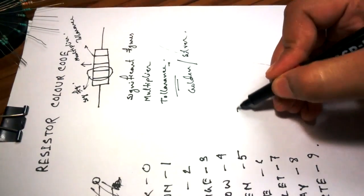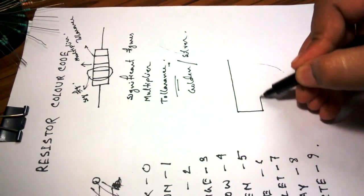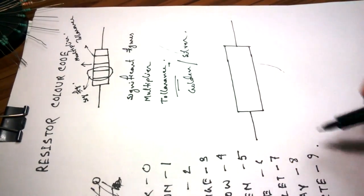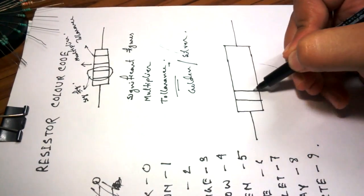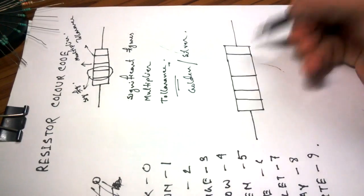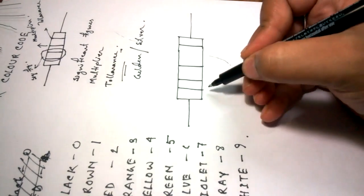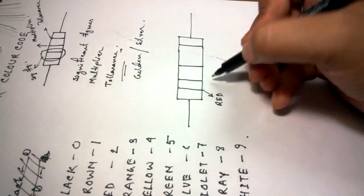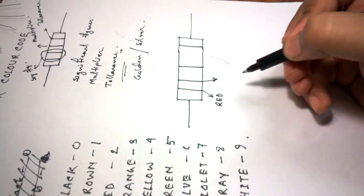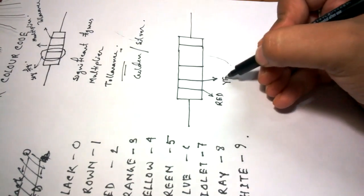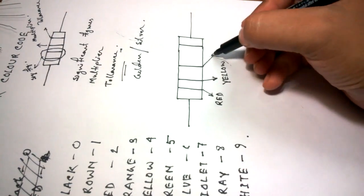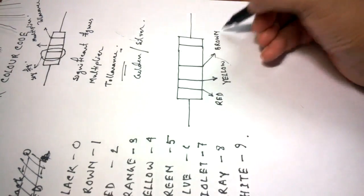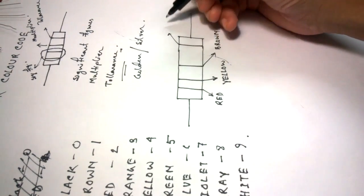Now, we will calculate the value of a 4-band resistor, okay. 1, 2, 3, 4, say the color of the first band is red, second band, say yellow, multiplier, say brown and tolerance, say golden.